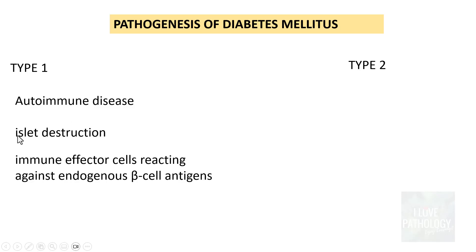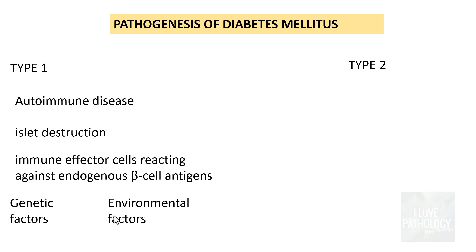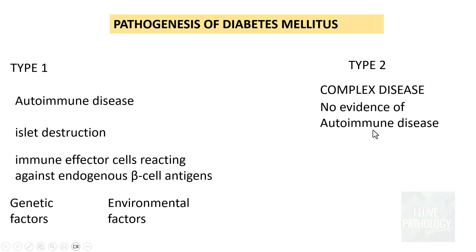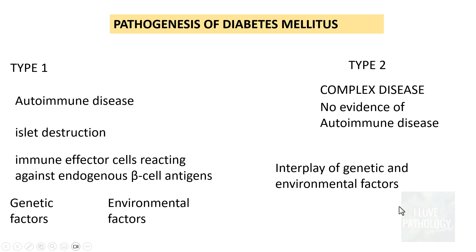Now, having understood glucose homeostasis, insulin secretion, and insulin action, let us understand some basic concepts of the pathogenesis of diabetes mellitus. There are two important types: type 1 DM and type 2 DM. Type 1 is an autoimmune disease where there is destruction of the islets of pancreas because immune effector cells react against our own beta cell antigens, resulting in autoimmune destruction. There are genetic and environmental factors involved.